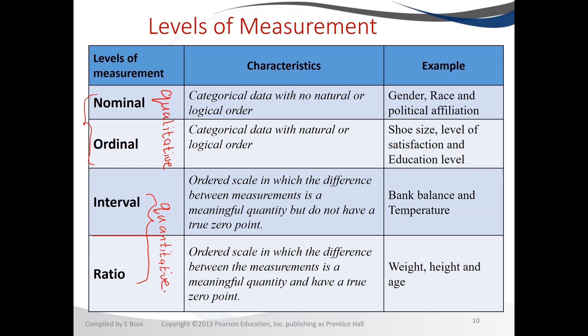For ratio data, things like weight, height, and age take a ratio scale. For example, you need to know the age range for the type of clothes you want to sell — newborn babies, zero to 12 months, 12 to 18 months — those have a true meaning of zero. If you sell a zero kilogram baby doll, it means it doesn't exist.